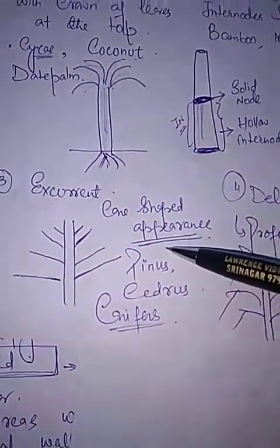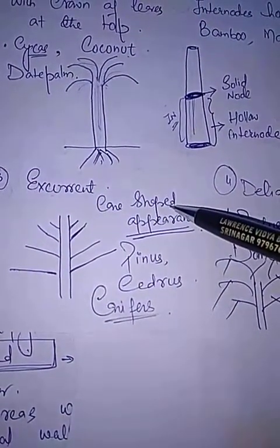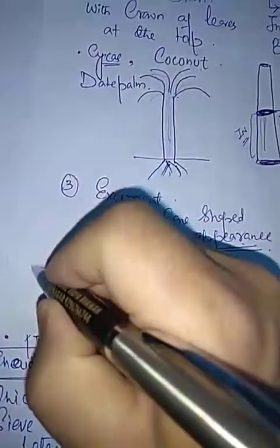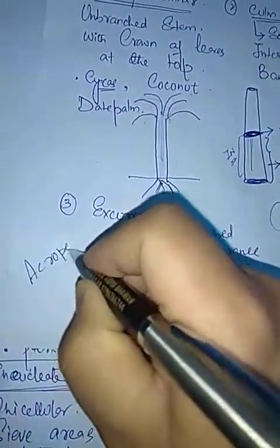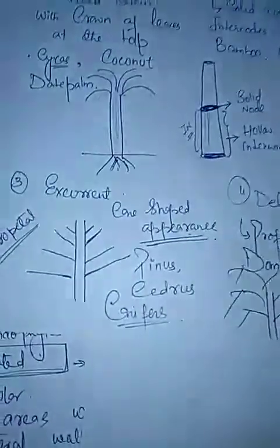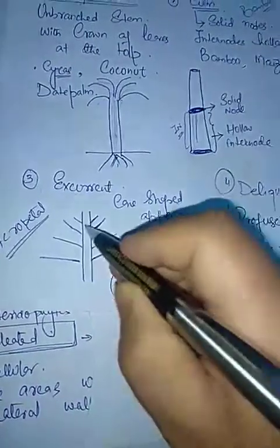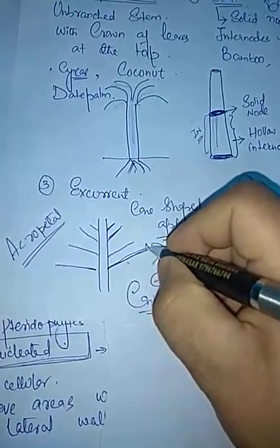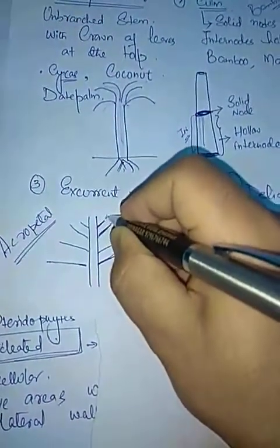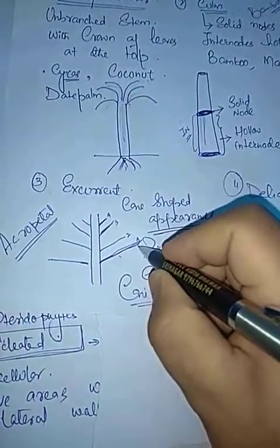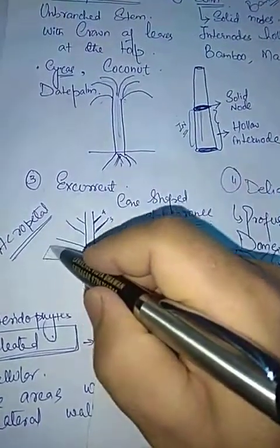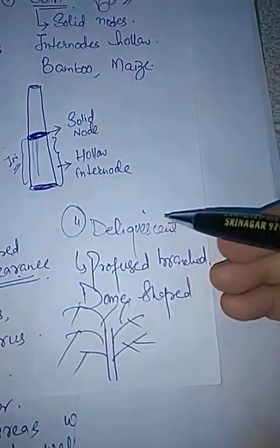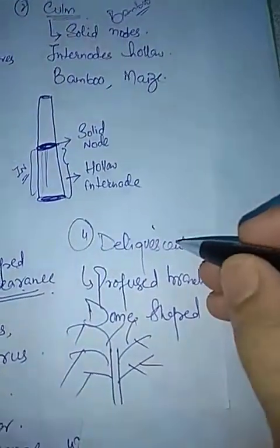There is another category of stem called excurrent. Excurrent is a type of stem or shoot system which has a cone-shaped appearance. This cone shape appears when the branching order in the plant is acropetal — meaning the oldest branch is at the base and the youngest is at the tip. For example, if branches are numbered 1, 2, 3, and 4, branch number 1 is the oldest and branch number 4 is the latest. This type of branching gives a cone-shaped appearance and is called excurrent stem.